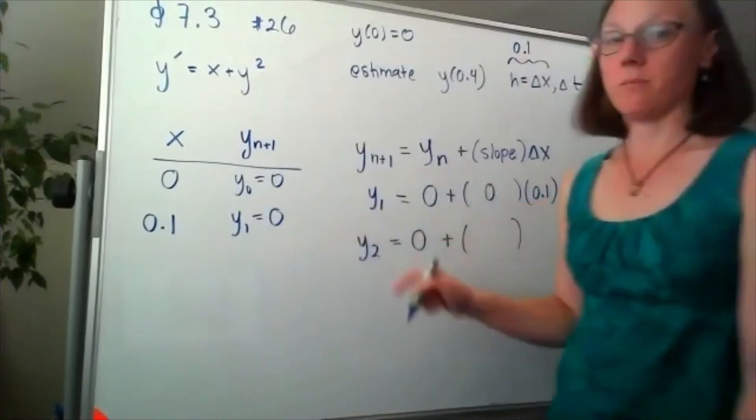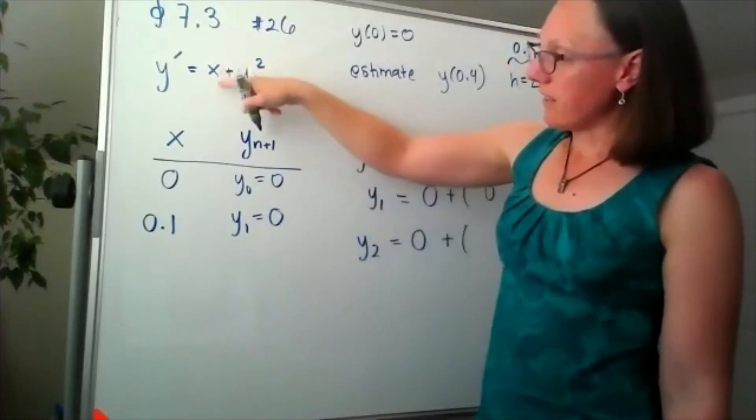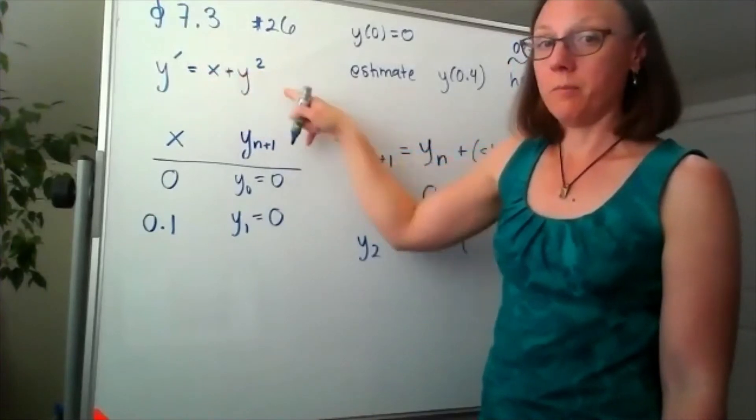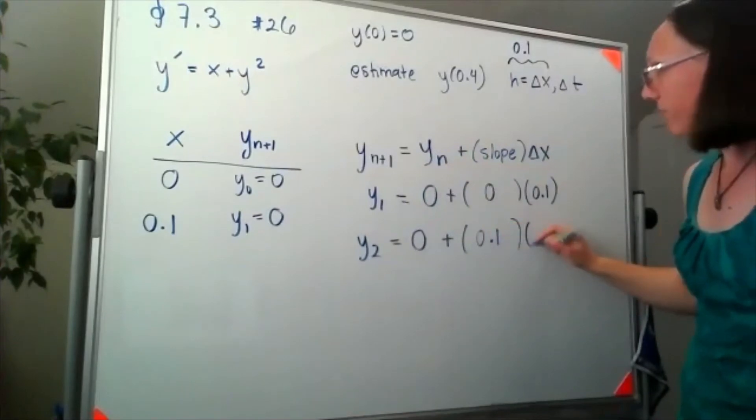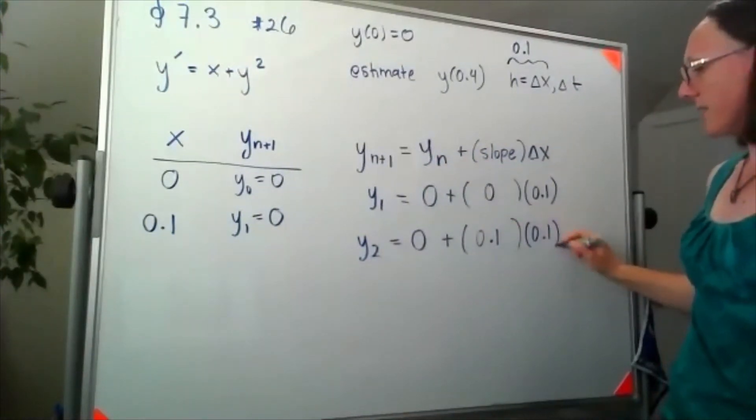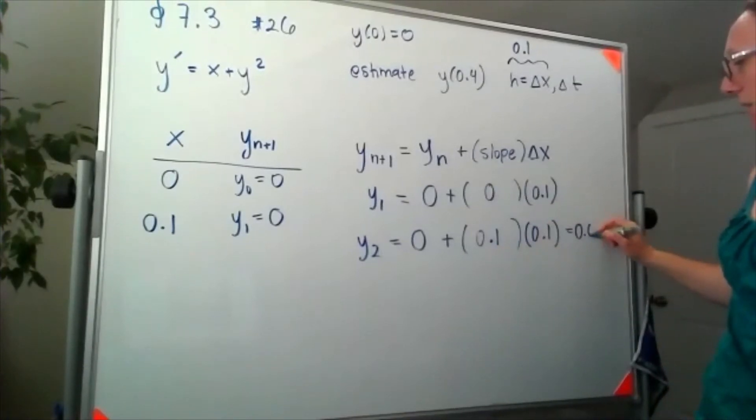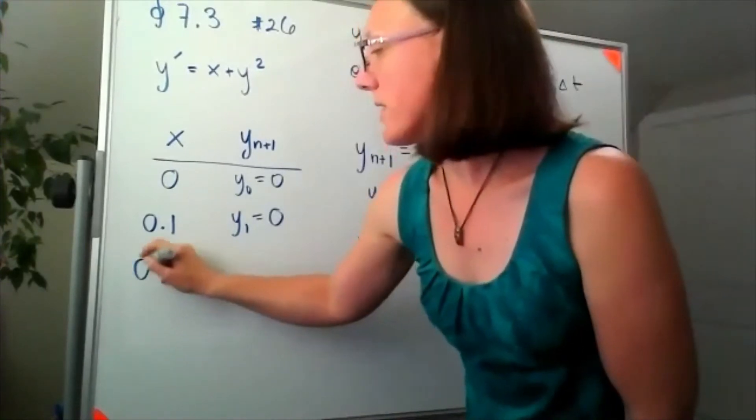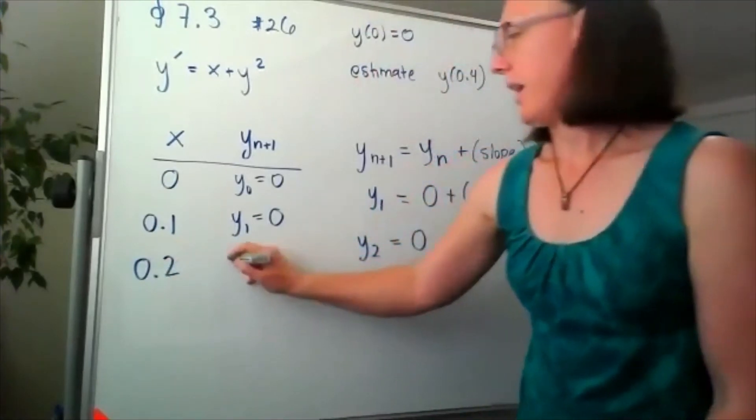Now I'm still standing at a y value of 0, but now I need the slope at this point I'm standing at. If I plug this in, that's going to give me a y prime or a slope of 0.1 plus 0, so my slope will be 0.1. Our time step is 0.1, so 0.1 times 0.1 should be 0.01. I am now standing at the point 0.2, and my new y value here is 0.01.